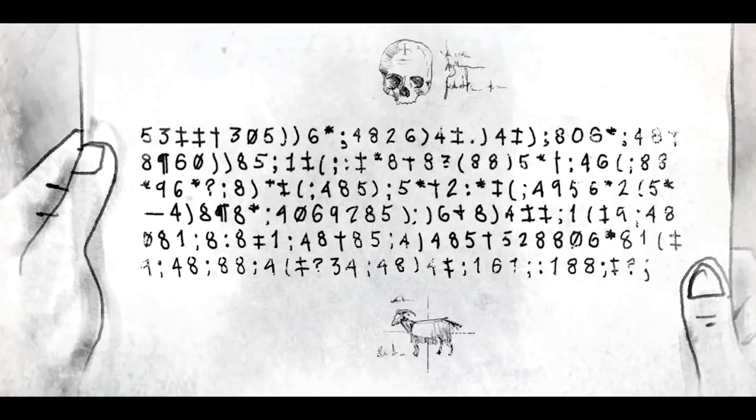Of the character 8, there are 33. Of semicolon, there are 26. Of 4, there are 19. Of double cross and close parentheses, there are 16. Of asterisks, there are 13. Of 5, there are 12. Of 6, there are 11. Of open parentheses, there are 10. Of cross and 1, there are 8. Of 0, there are 6. Of the characters 9 and 2, there are 5. Of colon and 3, there are 4. Of question mark, there are 3. Of paragraph mark, there are 2. And of exclamation and hyphen, there are only 1.